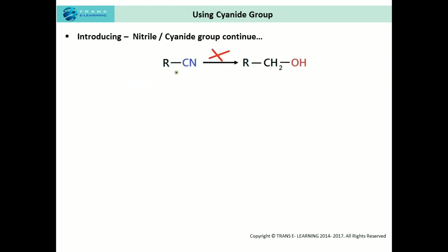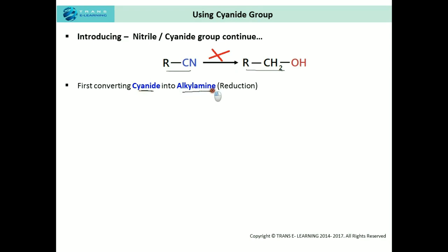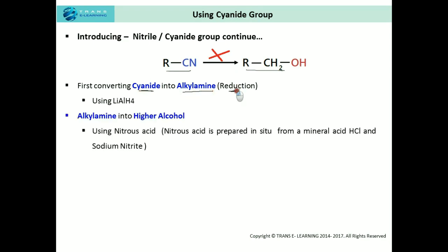There is a problem: we cannot convert this alkyl nitrile directly into higher aliphatic alcohols. We again need to take an indirect or longer route. First, we need to convert the alkyl nitrile into an aliphatic amine through a reduction process using lithium aluminum hydride.